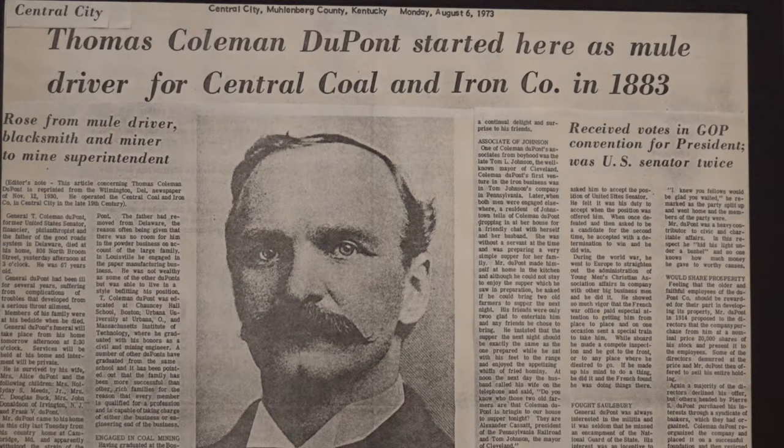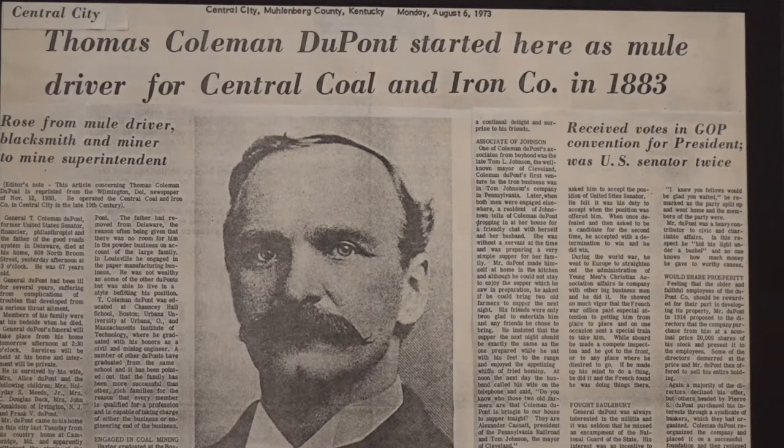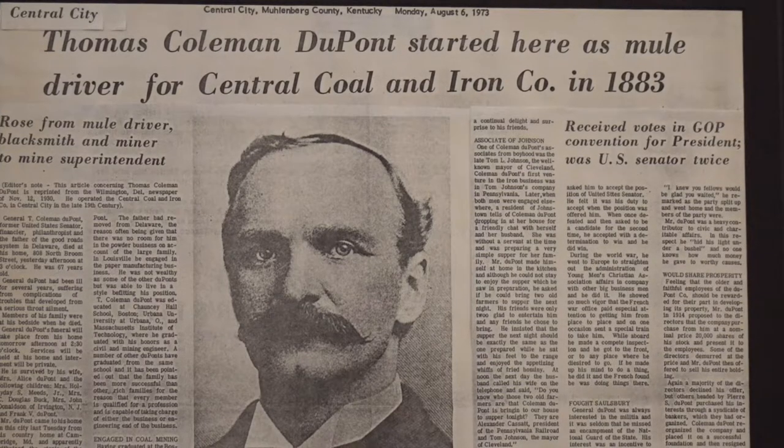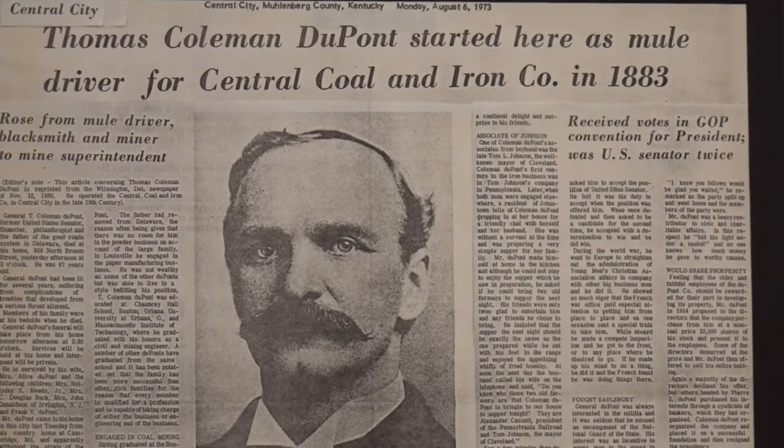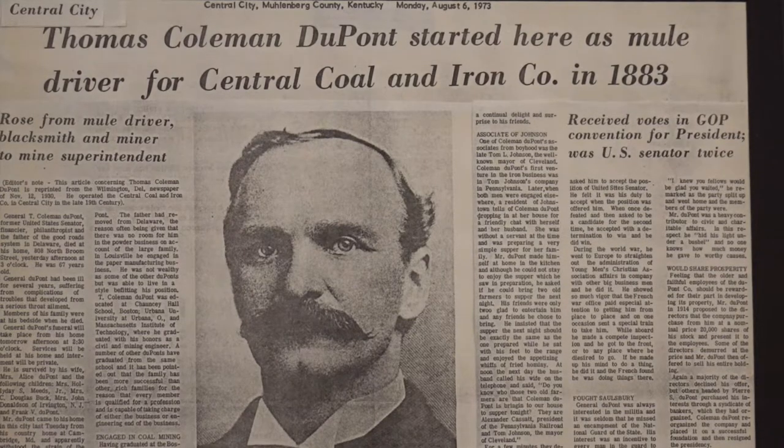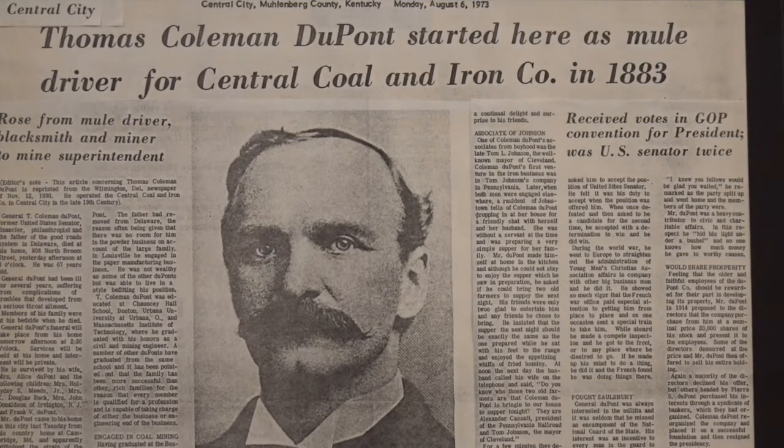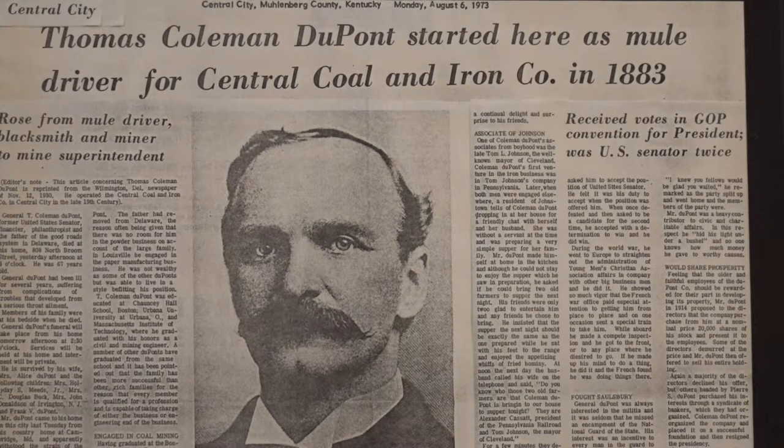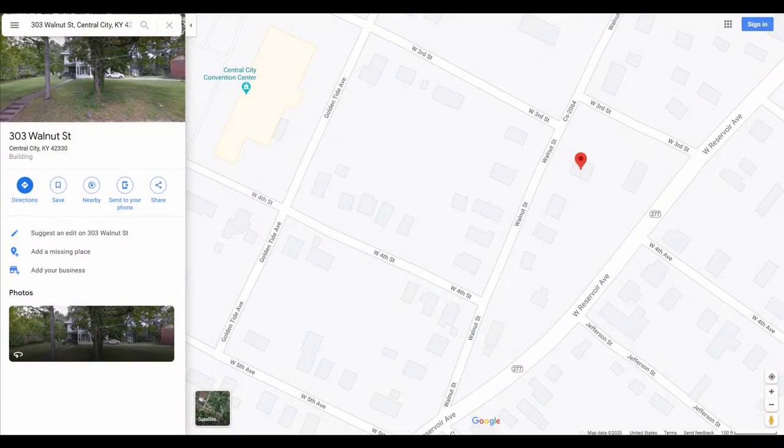When Thomas Coleman moved here, even though his father owned the company, he started humbly as an apprentice miner. He loaded coal and drove mules along with the other miners. However, during his time here, he worked his way up the ranks to eventually become superintendent of the company. He lived at the corner of West 3rd Avenue and Walnut Street in Central City. His former house still stands there today.